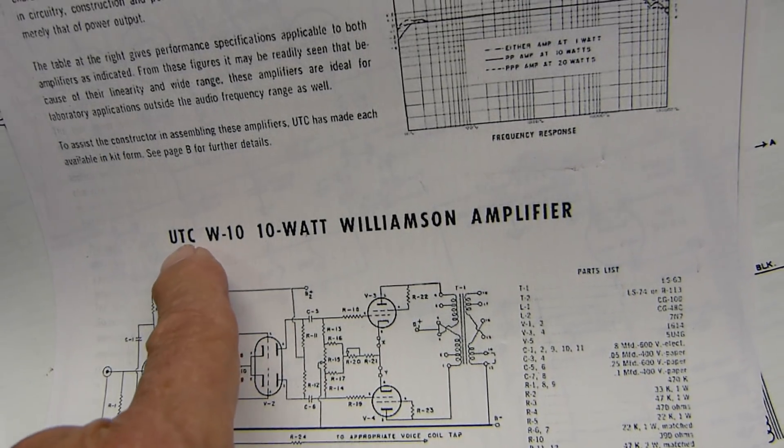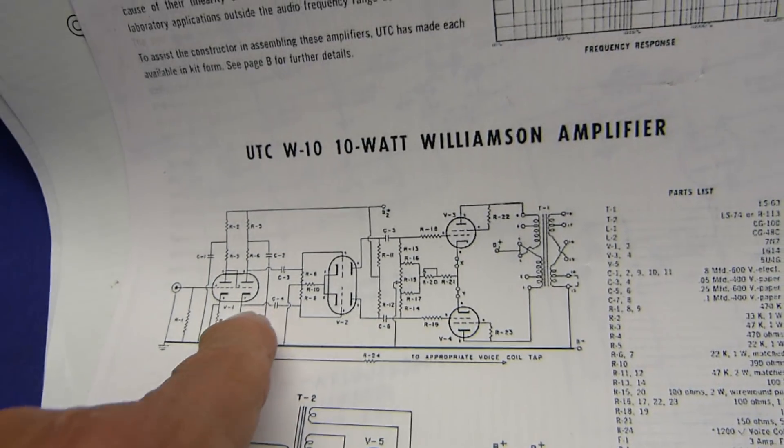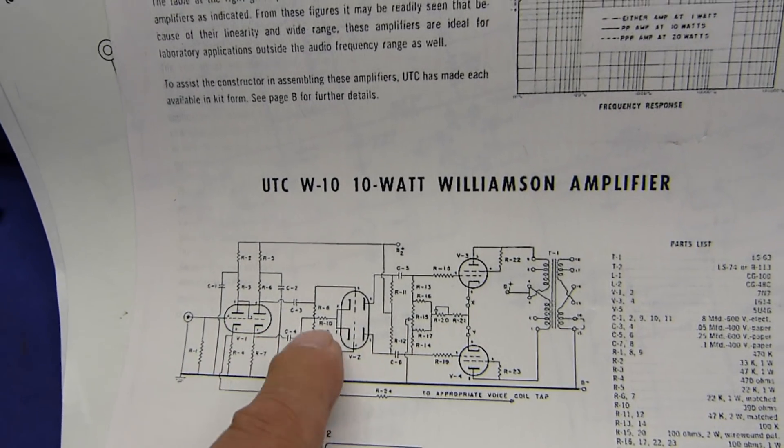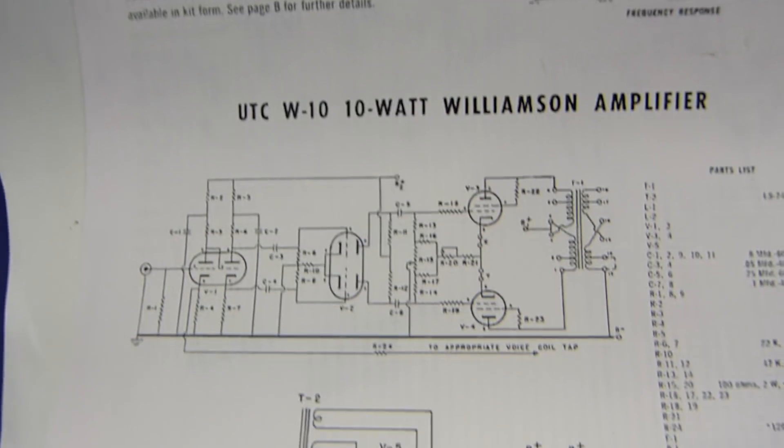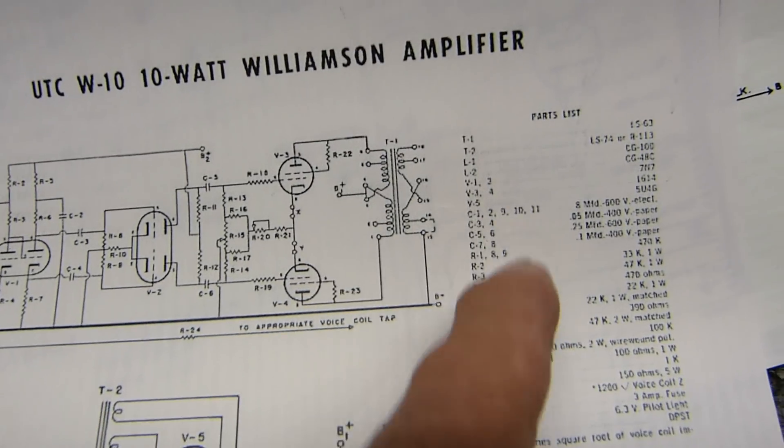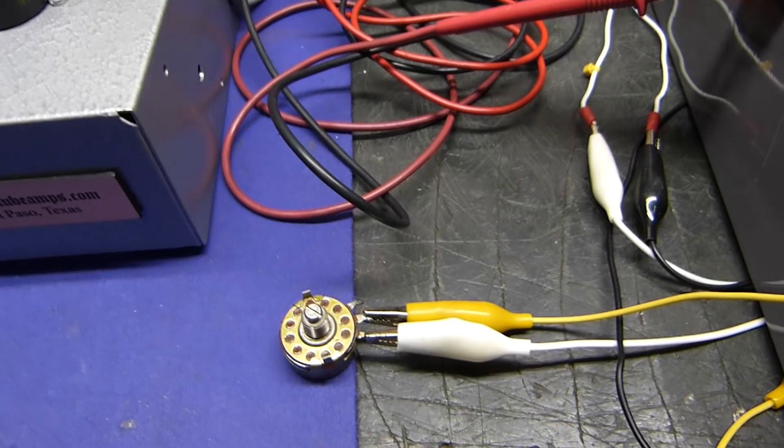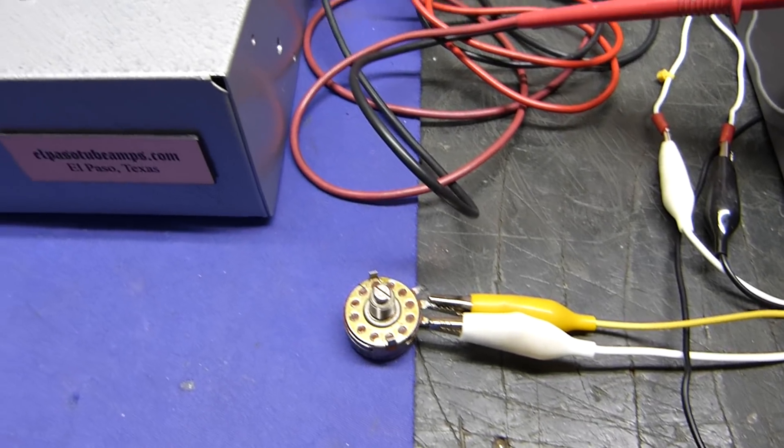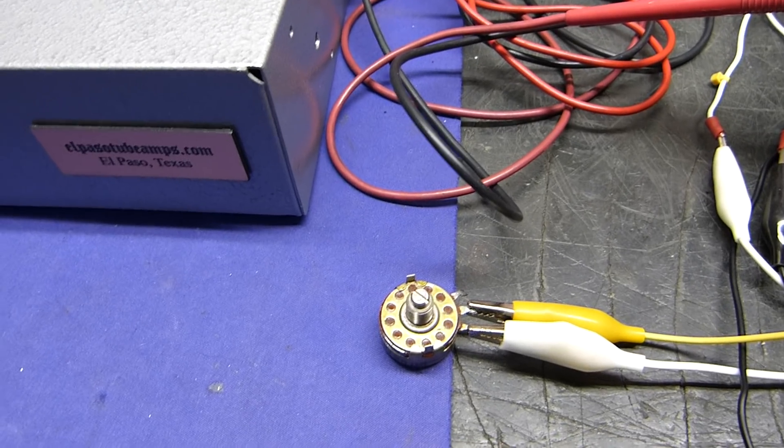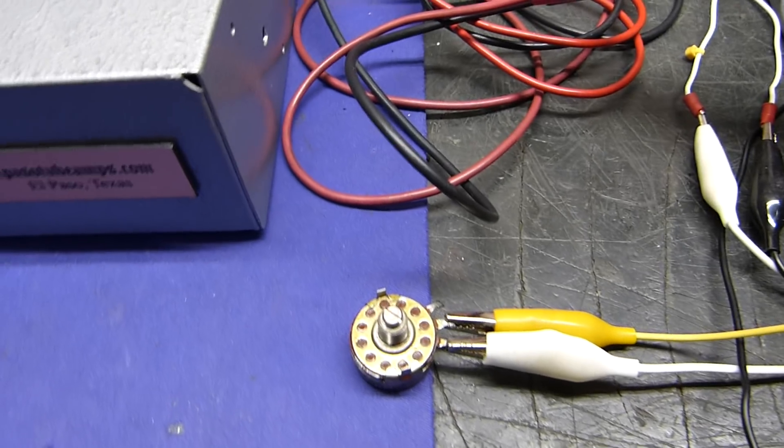I hope you can get a really good picture of that. See, there's the one that you use to set the current to like 110 milliamps. This is the one you use to balance them to 55 each. And that works. And you insert your one meter right there and one meter right there. This is a UTC W10, 10-watt Williamson amplifier. It uses a pair of 7N7s, which is the same thing as a 6SN7, but these are the Loctal bases. And there's all of the component values over there. Well, anyway, the point is, I've always found it a challenge to get the feedback exactly right, so I'm using this pot right here to adjust it.